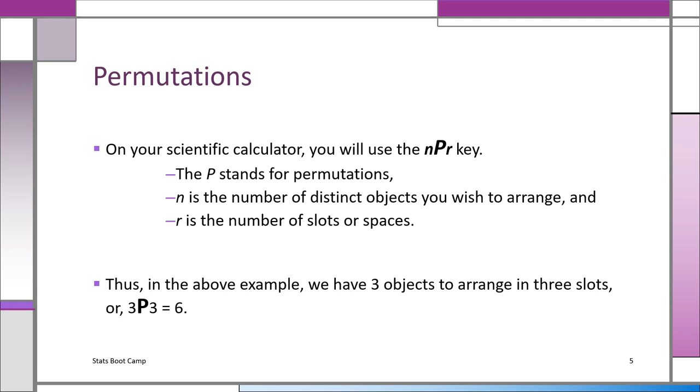If you look at your scientific calculator, you'll see an NPR key. P stands for permutations. N is the number of distinct objects before we had A, B, and C. So these are the objects you want to arrange, and R is the number of slots or spaces.